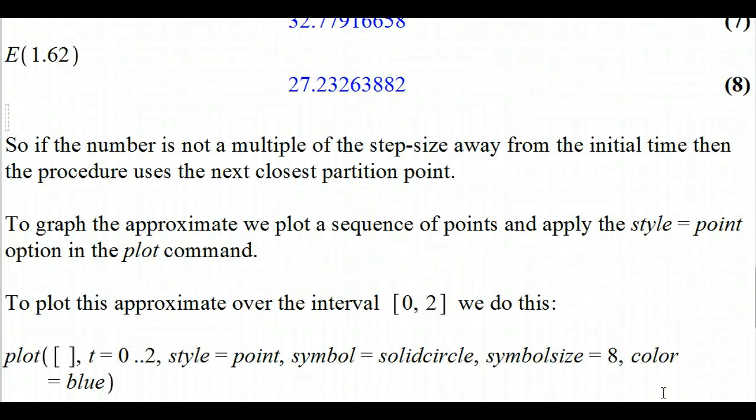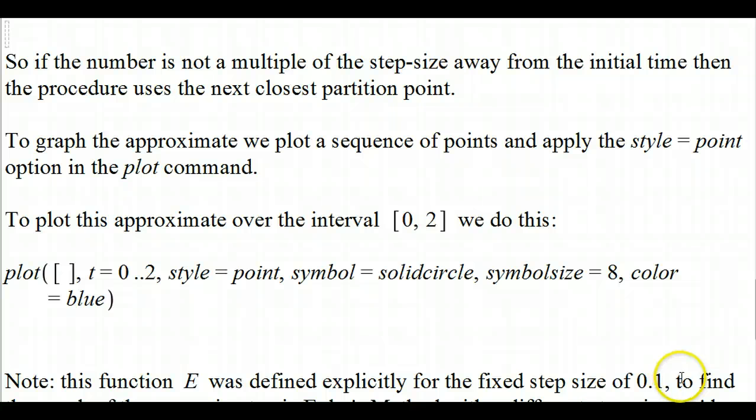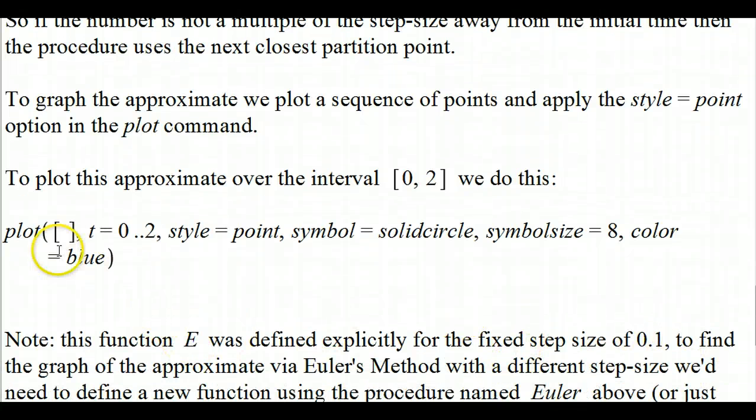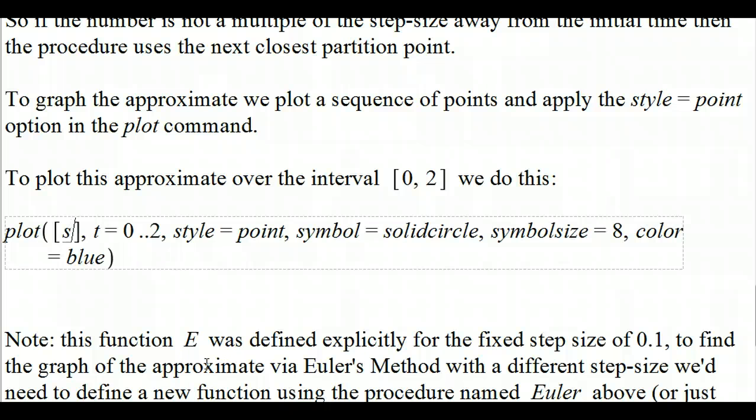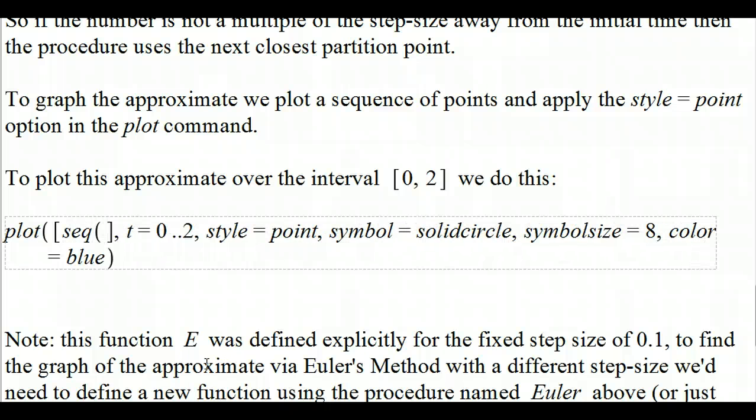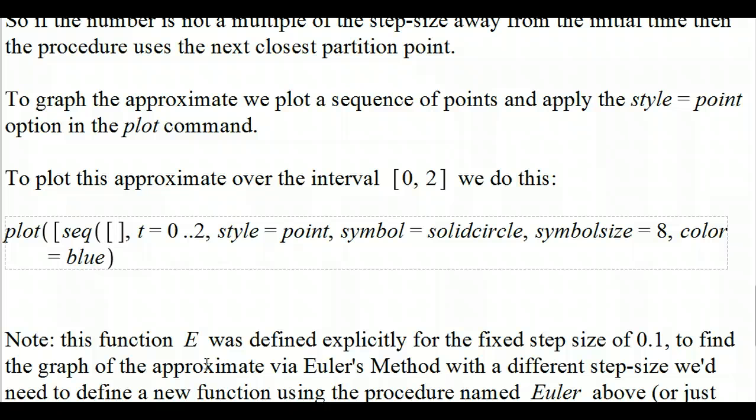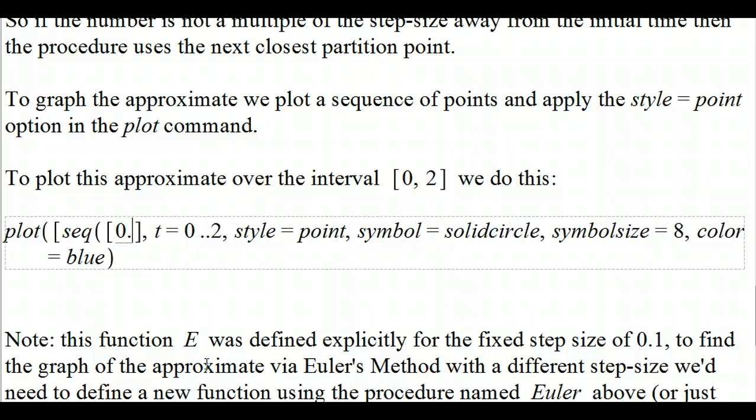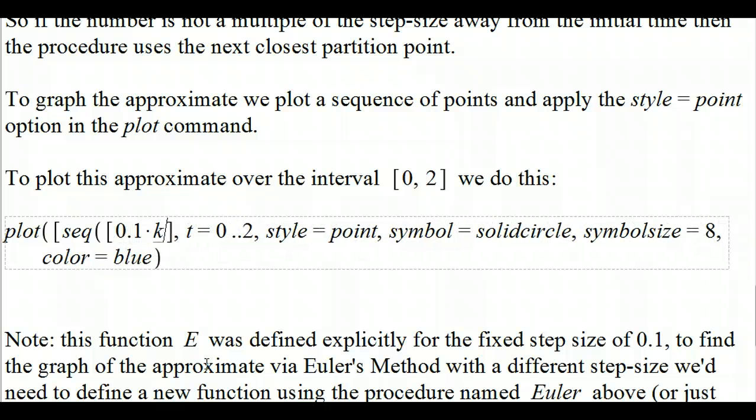Now, if you want to graph the approximate solution, what you do is you have to graph a sequence of points. What you're going to type in is a list of ordered pairs. Inside this, we're going to type in a sequence, and the sequence is going to contain the ordered pairs. We want to say that we're going to be a multiple of our step size away, and our step size is 0.1, so we're going to do 0.1 times k, where k is a dummy variable inside the sequence command.